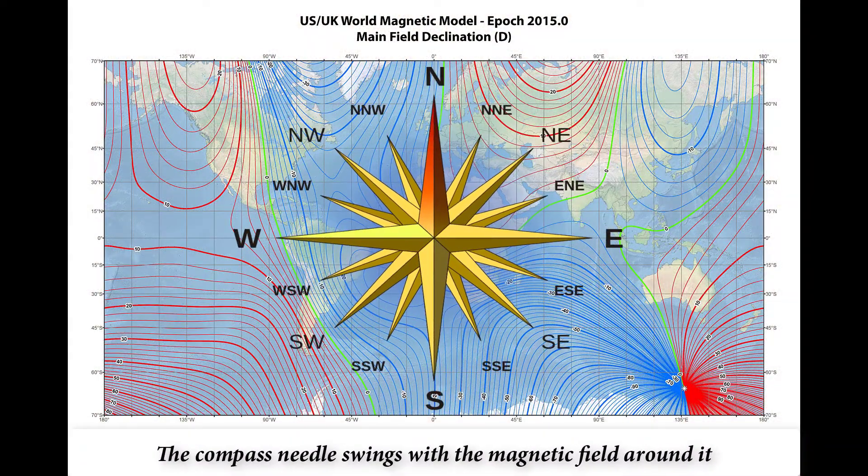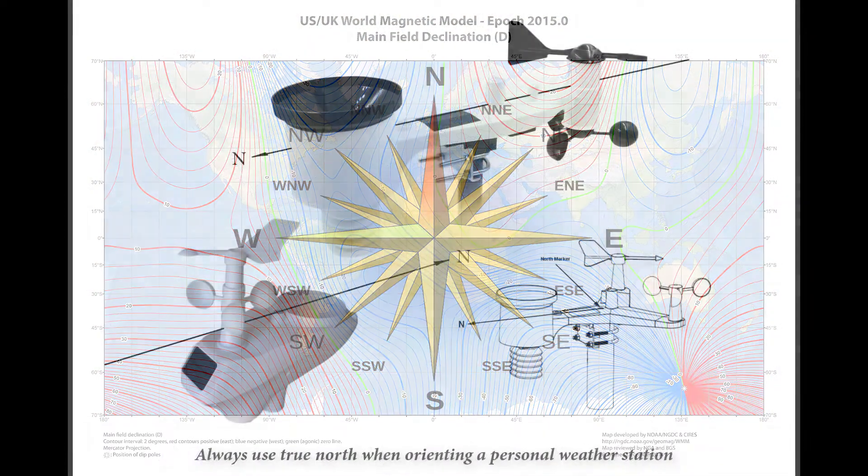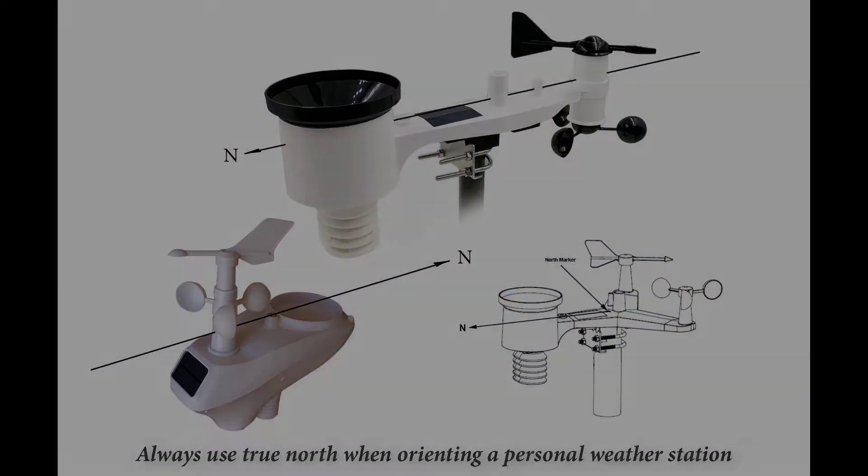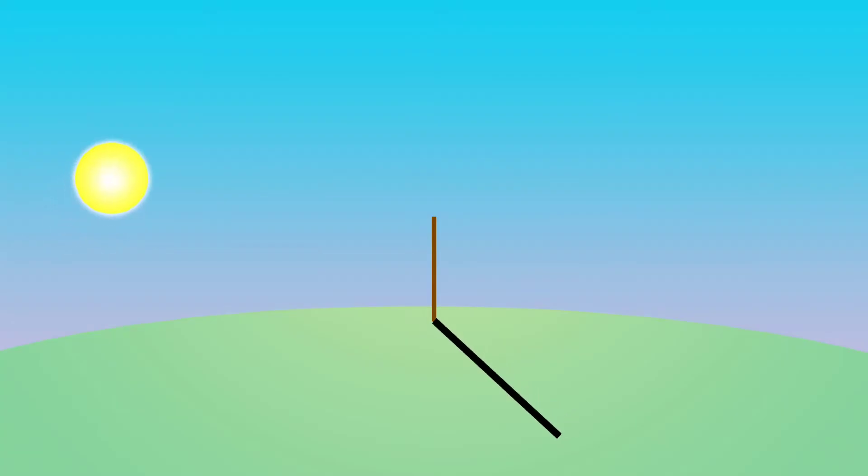True North should always be used for personal weather station orientation, something which is easily determined on a sunny day at noontime, that is, solar noon, not civil noon.